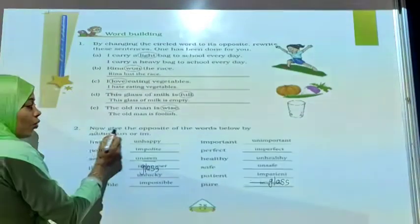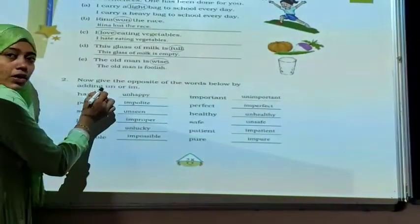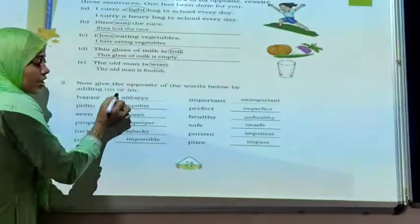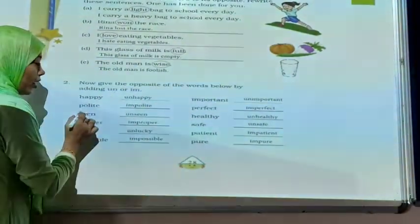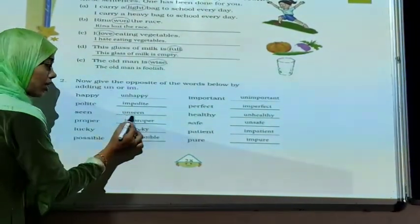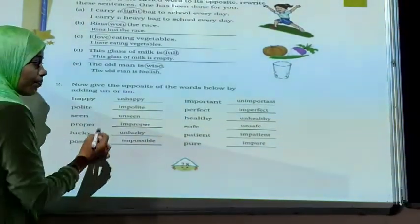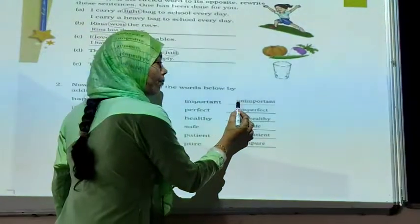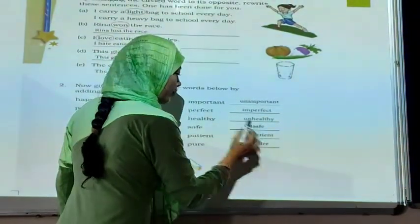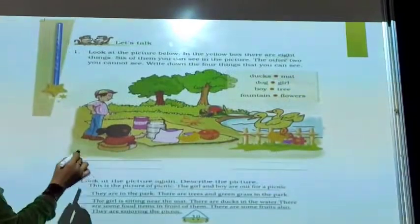Now exercise number 2: Read the opposite of the words below by adding 'un' or 'im'. In this exercise, choose the right prefix — 'un' or 'im' — to form the opposite word. Let's see: happy — unhappy; polite — impolite; seen — unseen; proper — improper; lucky — unlucky; possible — impossible; important — unimportant; perfect — imperfect; healthy — unhealthy; safe — unsafe; patient — impatient; pure — impure. So in this exercise, we add 'un' or 'im'.